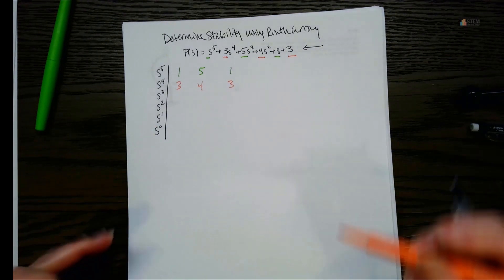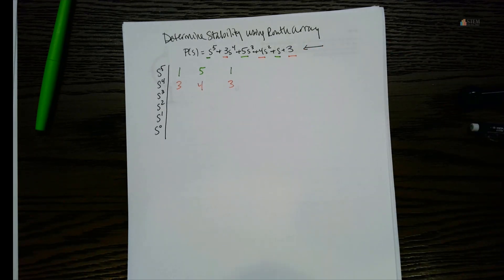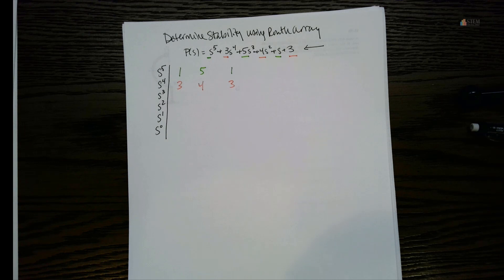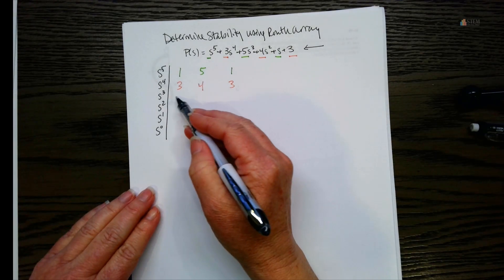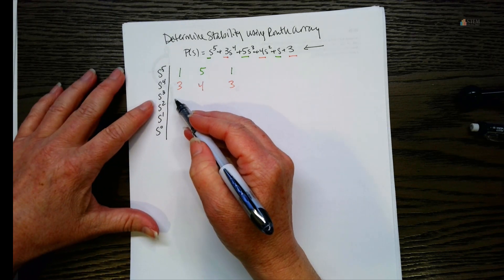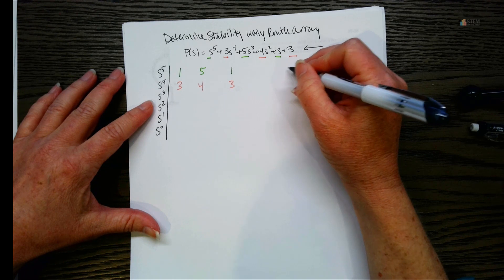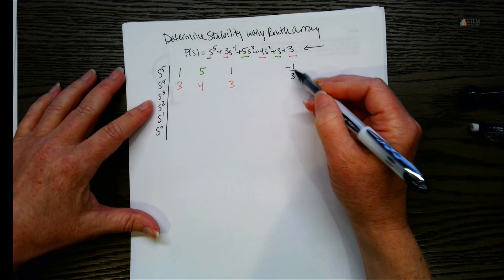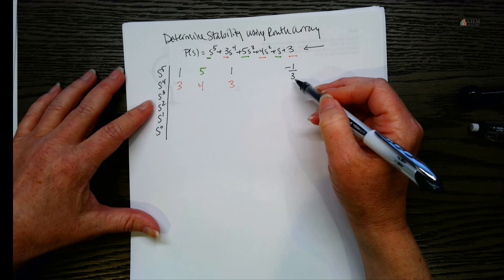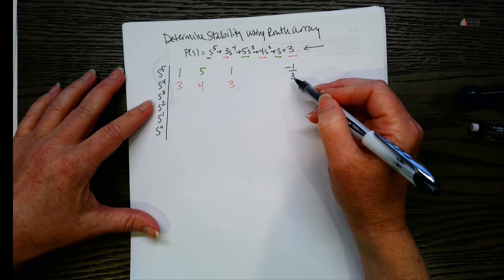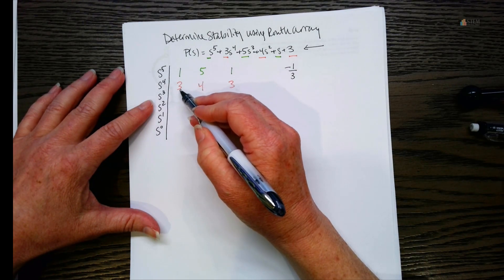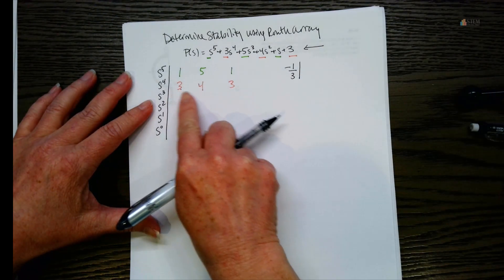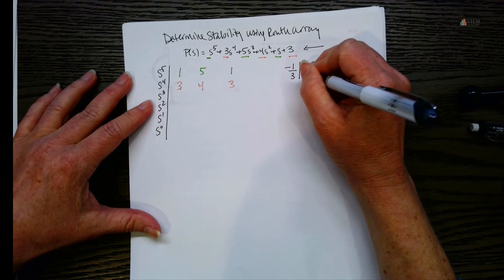Now we have our top two rows and we're done with the polynomial — we've gotten all the information we can from it. To construct the rest of the array, we form a determinant and multiply by negative one over three. The negative comes from the Routh Array formula — it's always negative out front. The three comes from the first element of the row above where we're working.